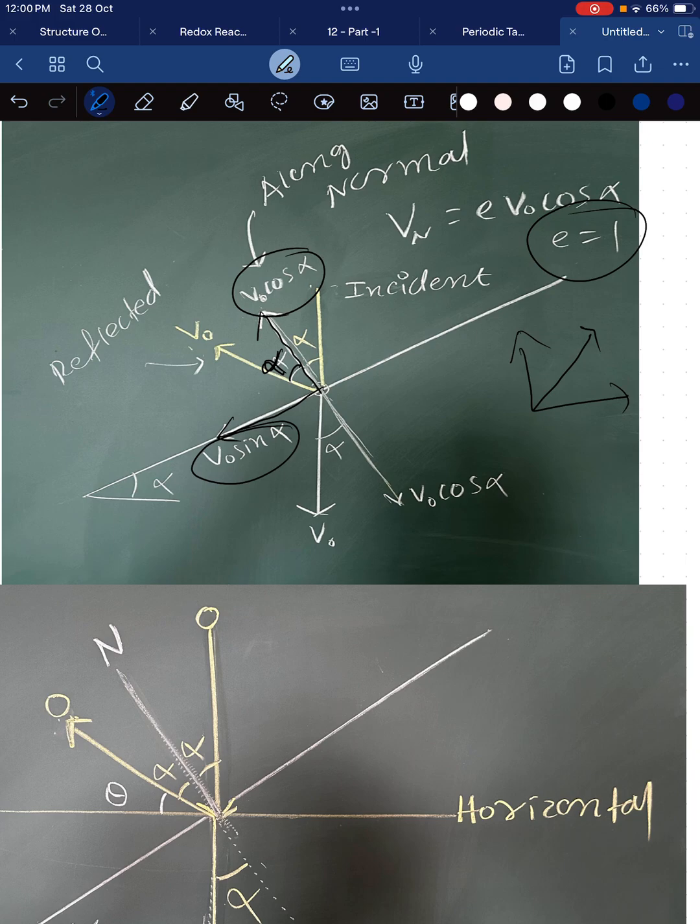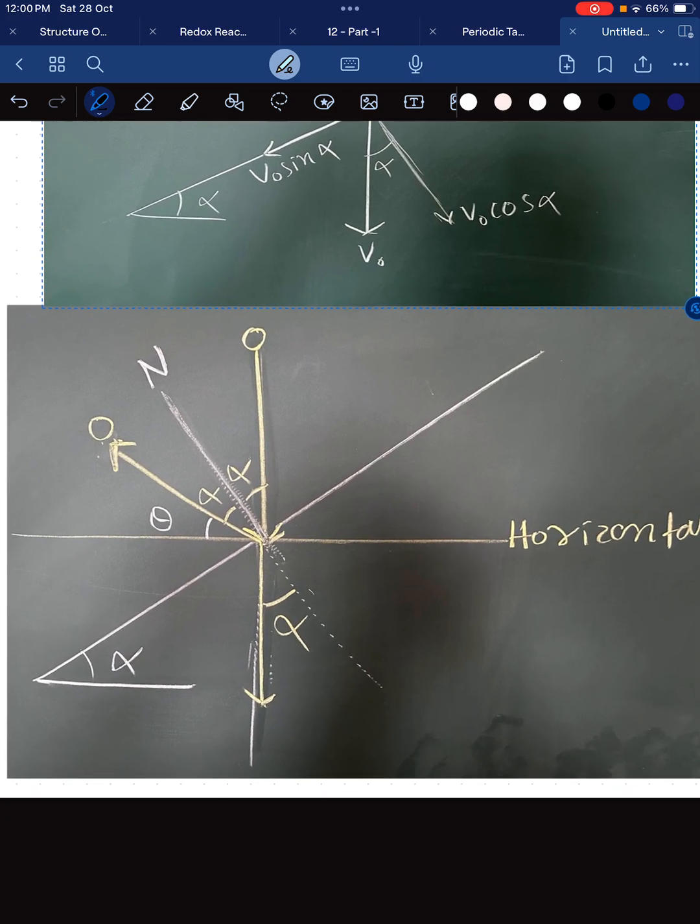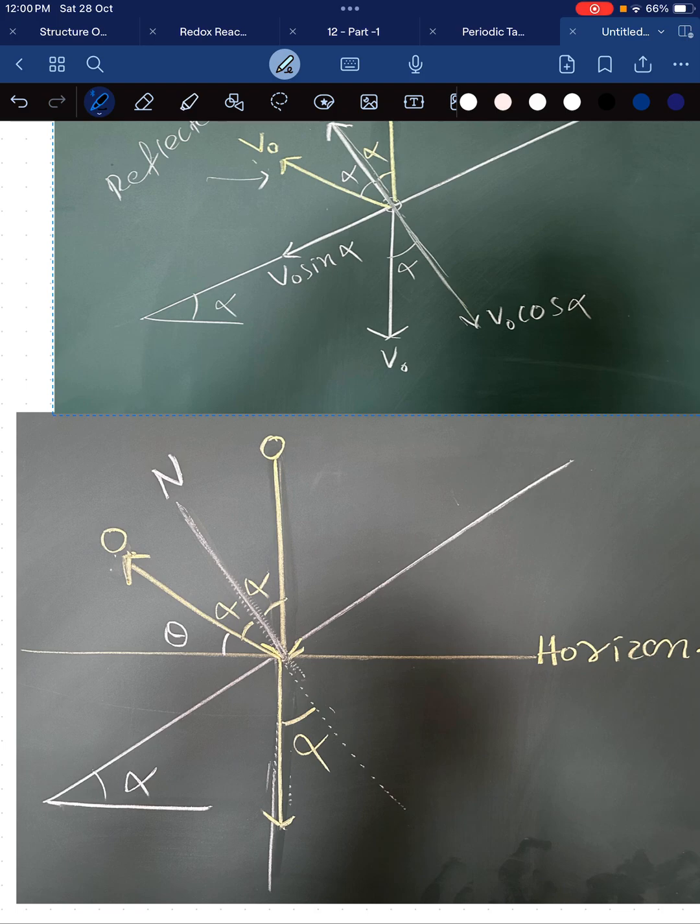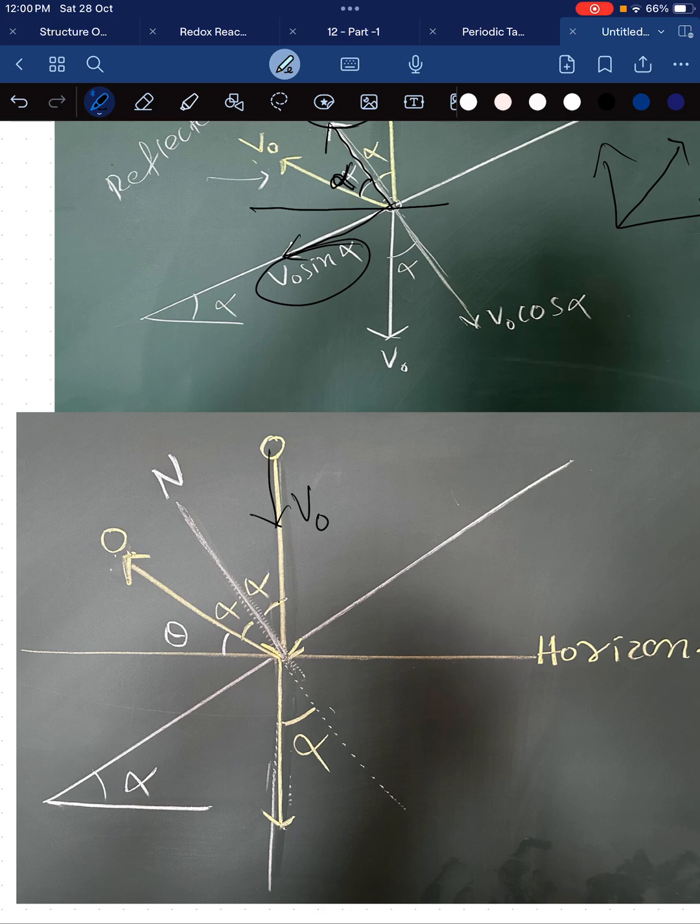Now, it is asked that we have to find the angle made by this velocity vector with the horizontal. For that we go to another figure. It is coming with this angle with velocity v naught striking the plane at an angle alpha and rebounding with the plane at an angle alpha.